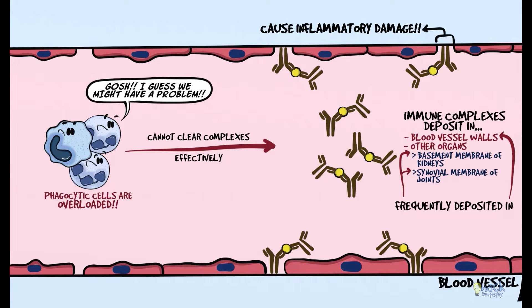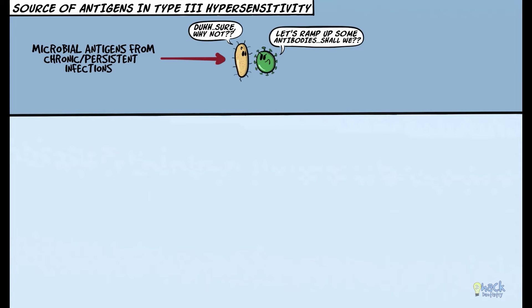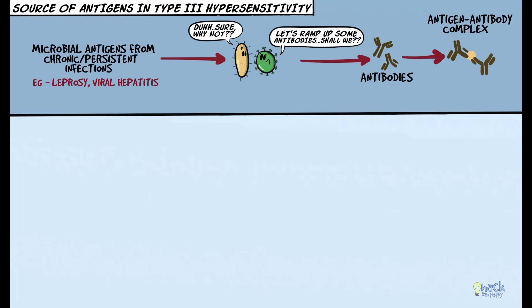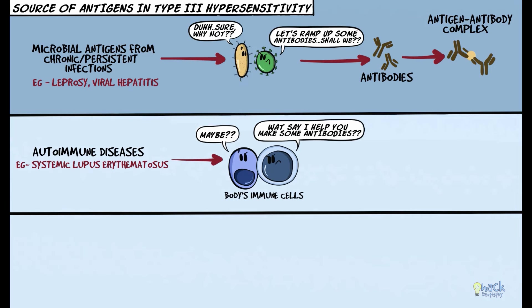The antigens in type III hypersensitivity could arise from three sources. Microbial antigens from a chronic or persistent microbial infection like leprosy or viral hepatitis could lead to excessive immune complex formation. In autoimmune diseases like systemic lupus erythematosus, self-reactive immune cells recognize the body's own nuclear antigens as foreign and produce autoantibodies against these antigens, forming immune complexes.